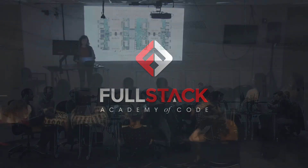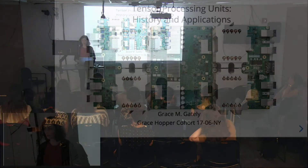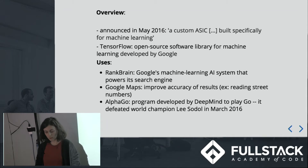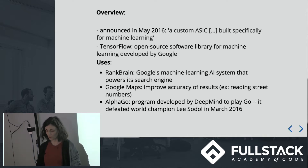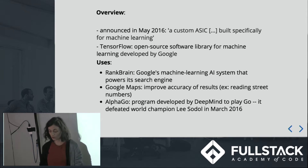Hi everyone, my name is Grace and today I'm going to talk to you about Tensor Processing Units, both their history and their applications. Google announced its Tensor Processing Unit, TPU for short, in May of 2016 as a custom application-specific integrated circuit for machine learning. It was built to be compatible with Google's TensorFlow project, which is an open source software library for machine learning across a range of tasks. It can build and train neural networks to detect and decipher correlations in a manner analogous to patterns in human reasoning.